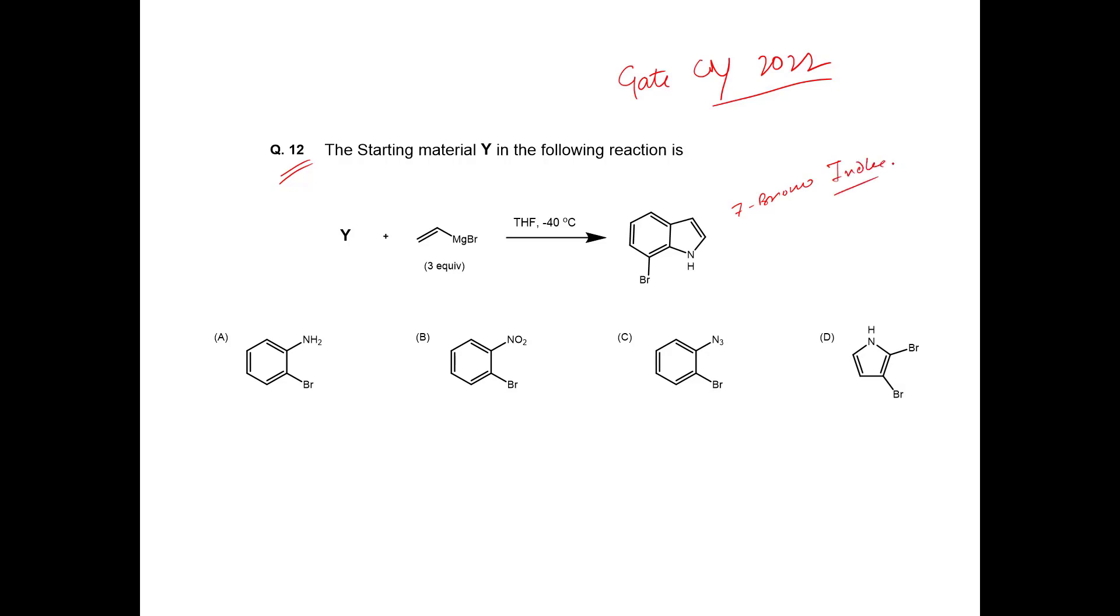The options are 2-bromo aniline, 2-bromo nitrobenzene, 2-bromo benzazide, and 2,3 di-bromo pyrrole. If you look closely at the product, Bromine is attached at the 7 position, ortho to this 5-member ring. On the left side there is only Vinylmagnesium Bromide from which Bromine cannot come to this position. So it must have come from Y, and Y must be our answer.